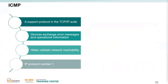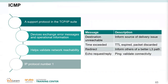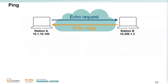ICMP is IP protocol number 1, used to verify layer 3 connectivity. When you use the 'ping' command, you send an echo request and receive an echo reply. ICMP verifies reachability but does not show the path in between. Traceroute, on the other hand, reveals the path — it shows each hop and its IP address to reach the destination.